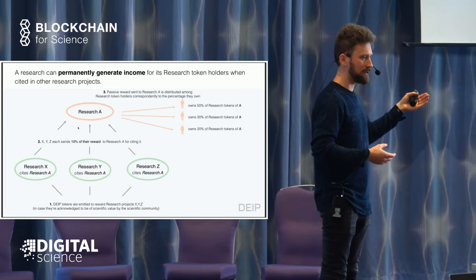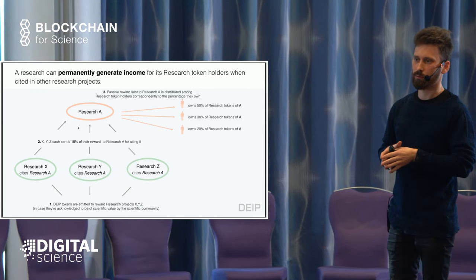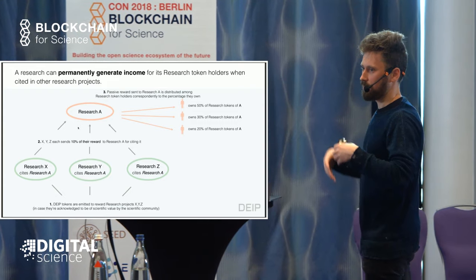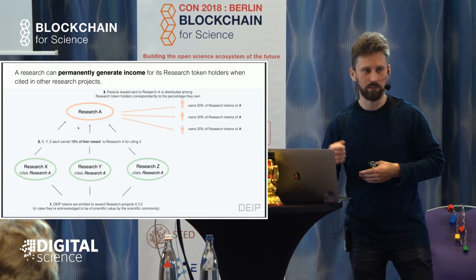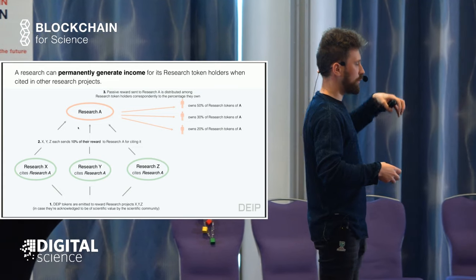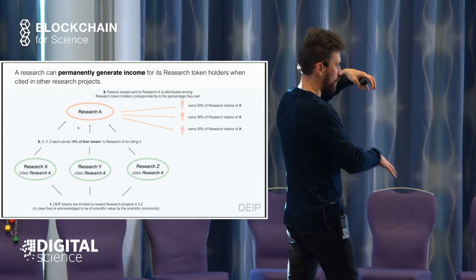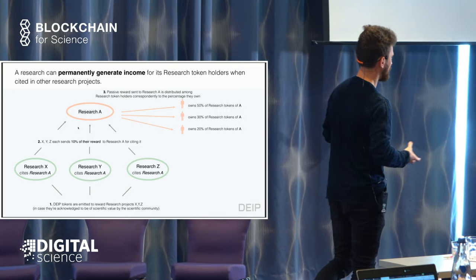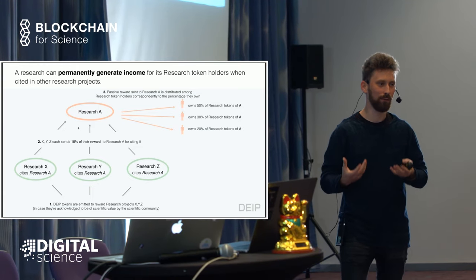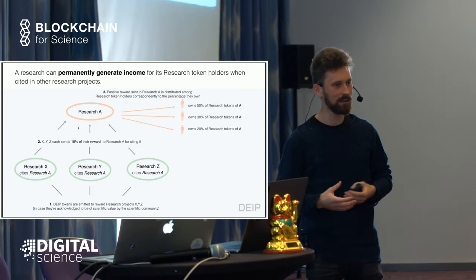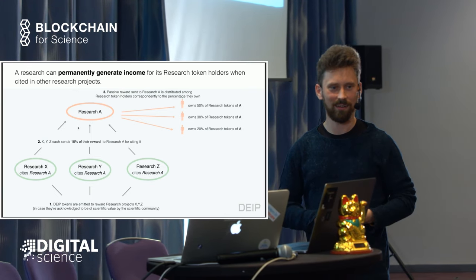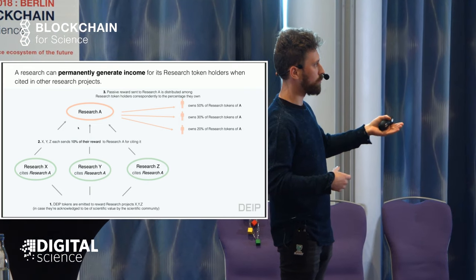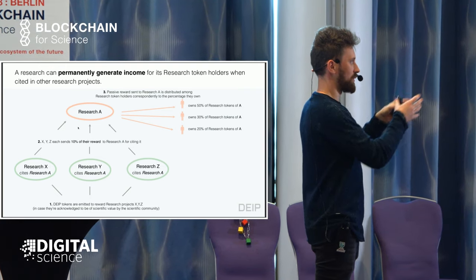In our system, a part of the reward is also distributed to references. If your basic research is referenced a lot from other research projects that earn some income within the system, your basic research will be rewarded from all research projects which are based on knowledge you created. This is kind of returning value back to basic research, which has been a bit lost during the past 100 years. By doing basic research, you will still be rewarded from every piece of knowledge produced from it.